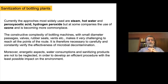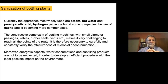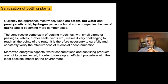There are many methods to sanitize bottling plants after the initial cleaning. These include steam, hot water, or chemical agents that are considered safe for the working environment, such as peroxyacetic acid, hydrogen peroxide, and more recently ozone.